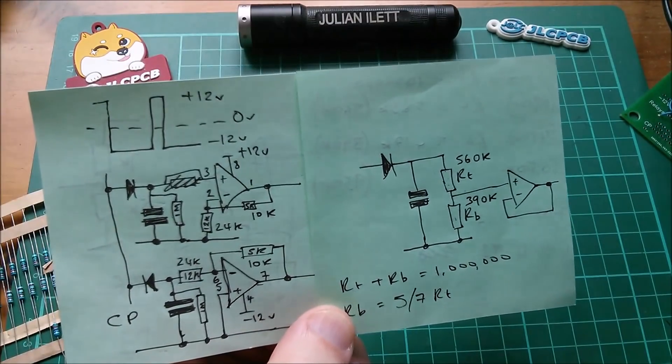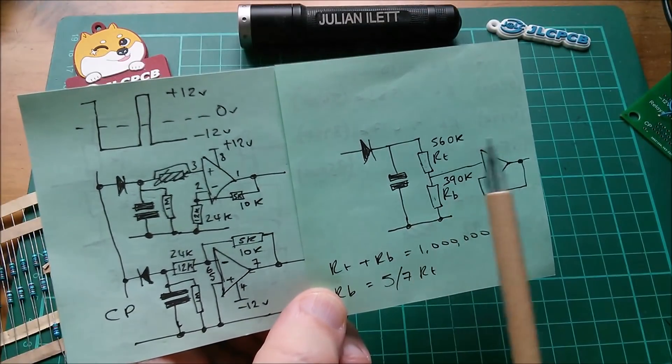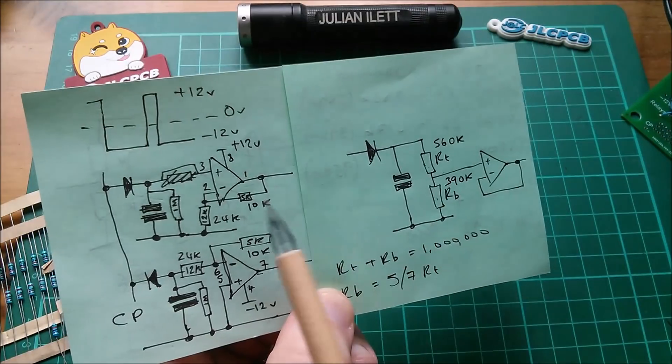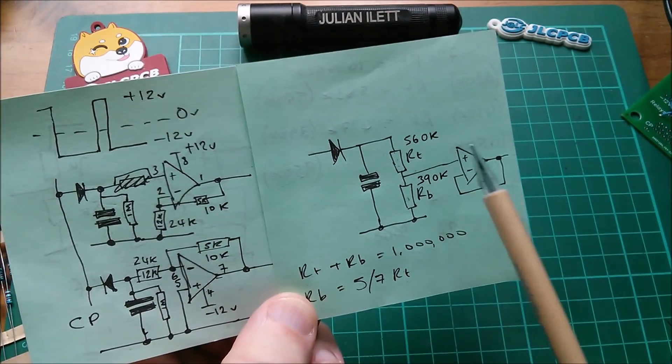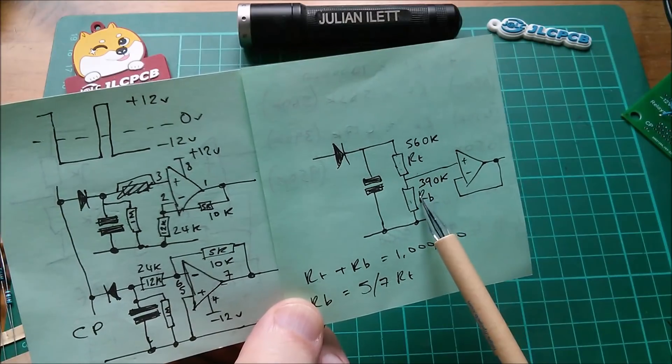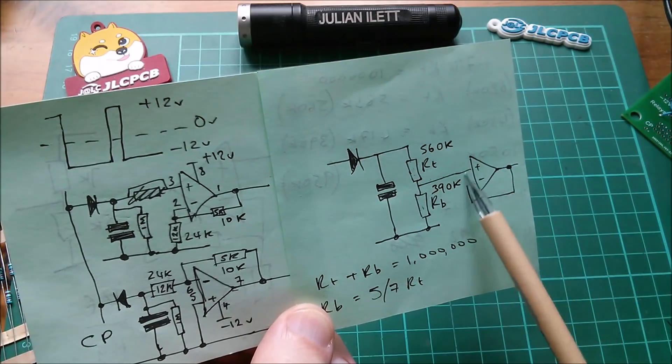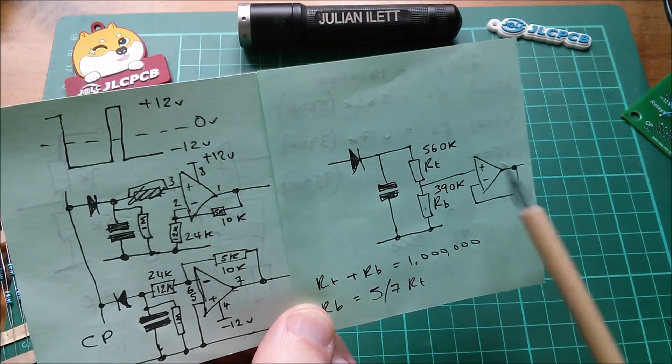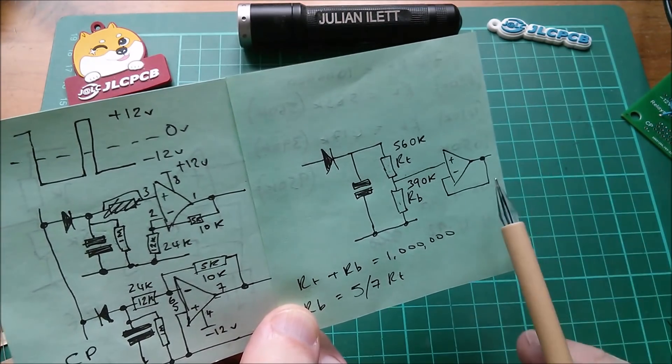So for my non-inverting but gain less than one op-amp, I have to move away from this because the formula for this doesn't work, and I have to go to this: 560k over 390k and a unity gain non-inverting buffer there to present a low impedance to the input of the Arduino.